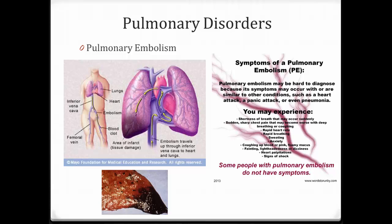Pulmonary embolisms are another disorder. They can result from, for example, a deep vein thrombosis — a blood clot in the leg that travels up, passes through the right side of the heart, and becomes lodged in the lungs since that's the next small vessel it encounters. Any tissue served by those blood vessels then becomes infarcted. Pulmonary embolism symptoms can be hard to diagnose because they are similar to a heart attack, panic attack, or pneumonia — including dyspnea, sharp chest pain, rapid breathing, anxiety, and sweating — so careful diagnosis is required.